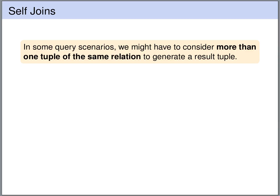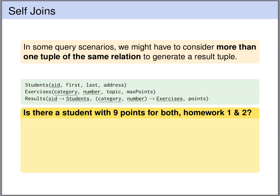Let's have a look at an example. We want to write a query that gives us the students that have received nine points for both homework one and two. Clearly we are going to query the students table, because we want to have the name of those students that have gotten nine points for homework one and two. Also we want to query the results table because we need to look up the results of the student for homework one and two.